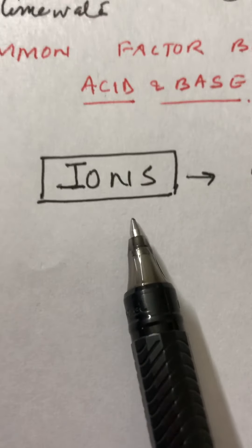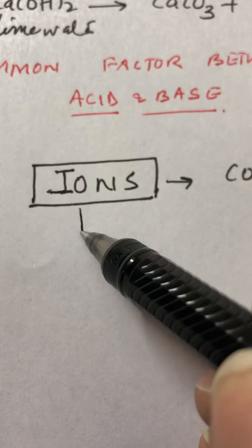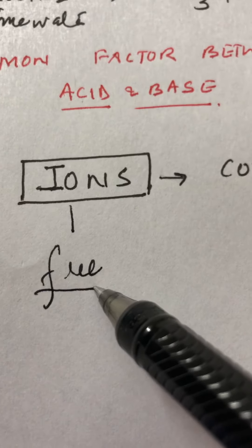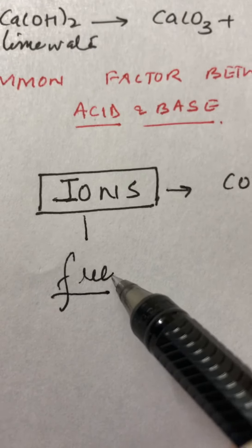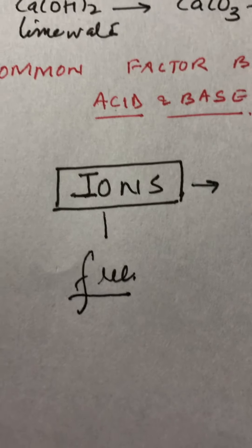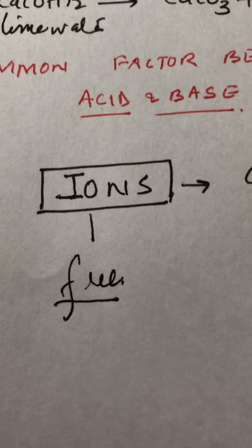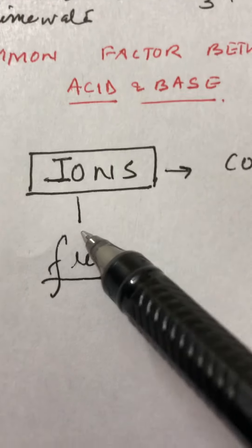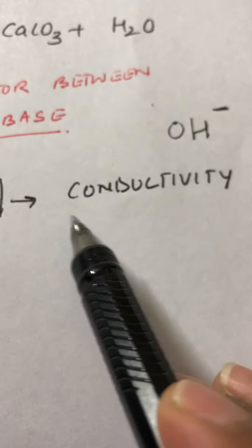If these ions in solution are free and mobile — meaning water breaks their forces of attraction and they become free to move — then any solution containing free mobile ions becomes a very good conductor of electricity.